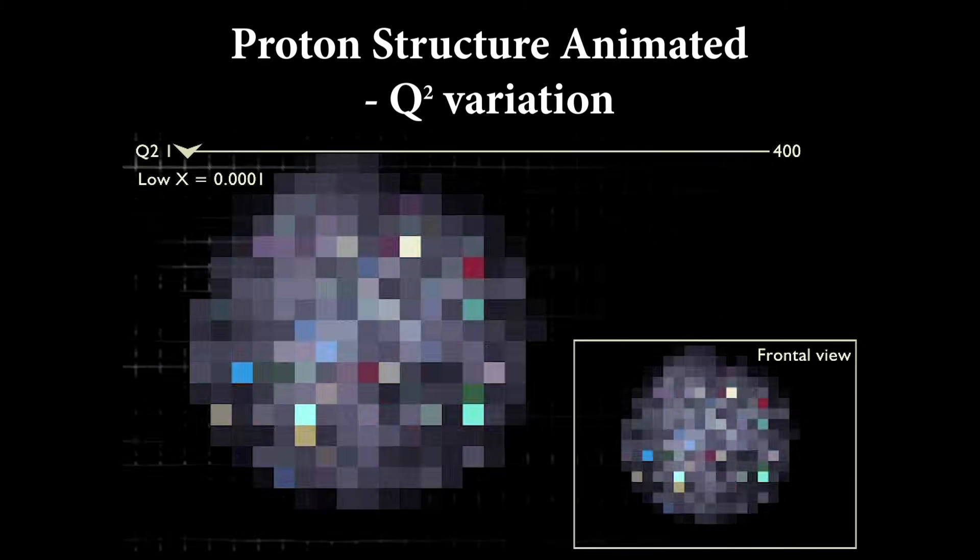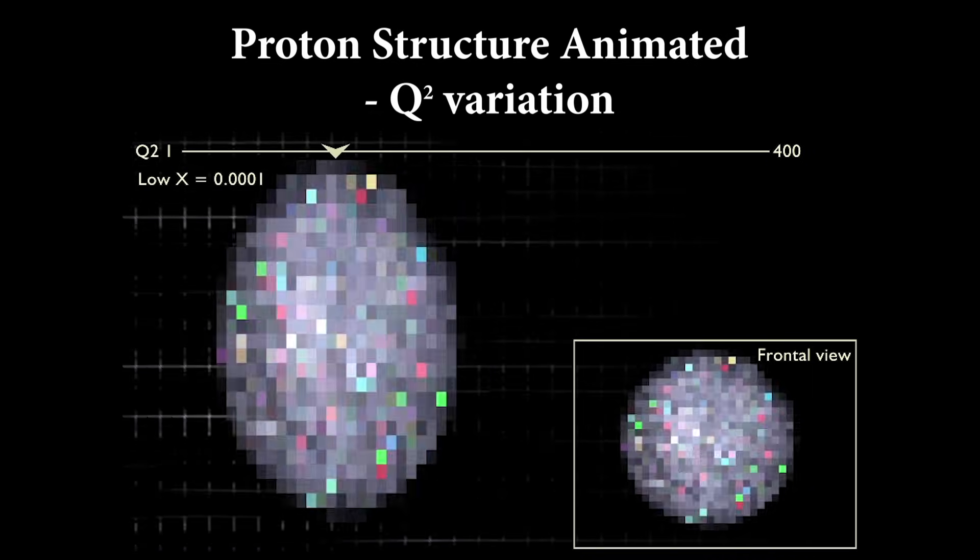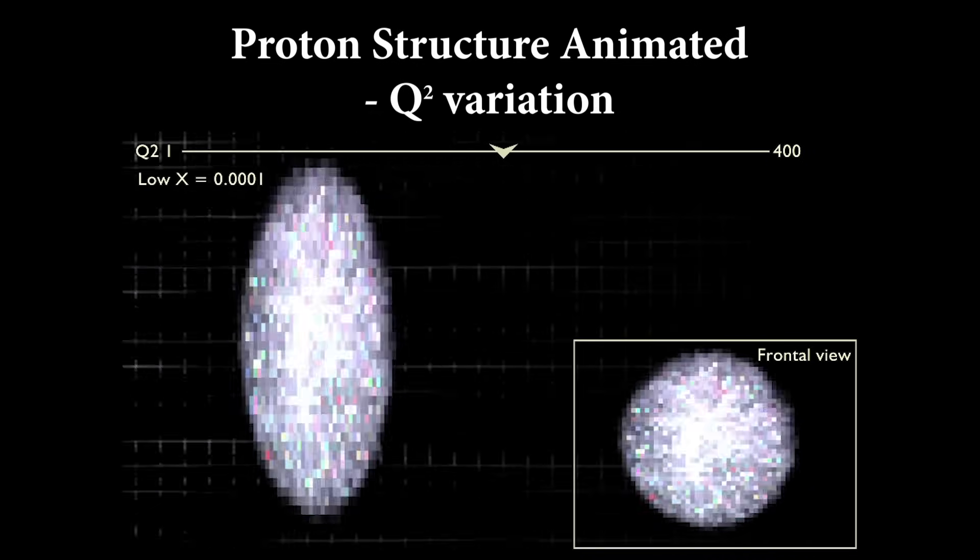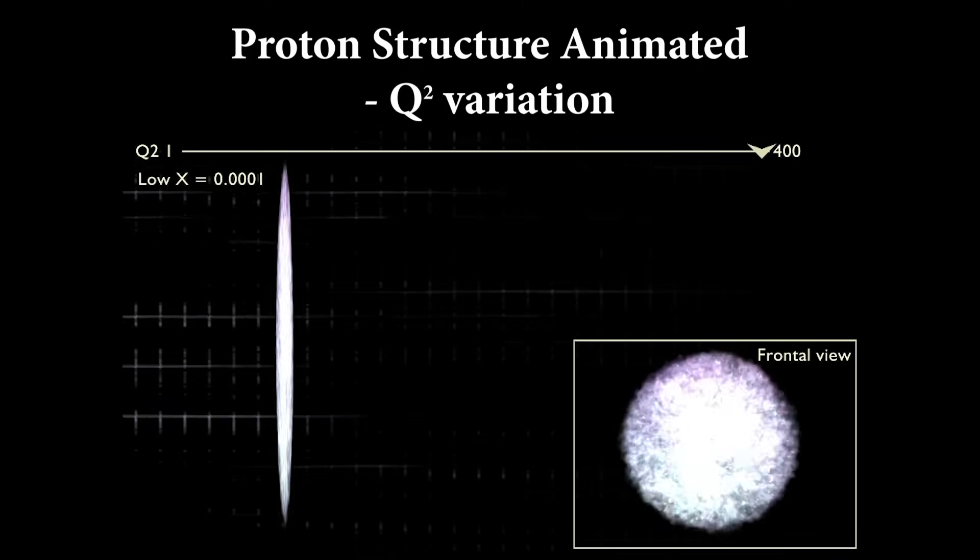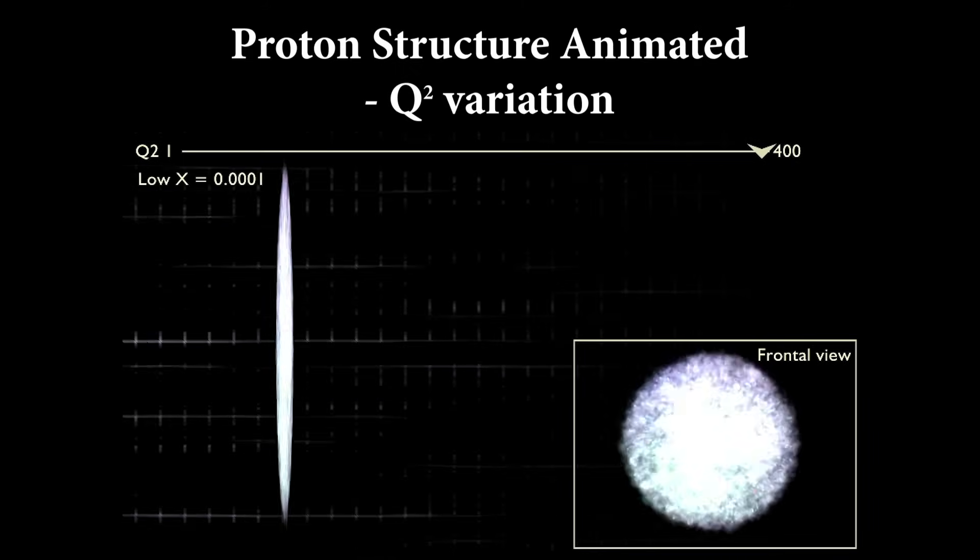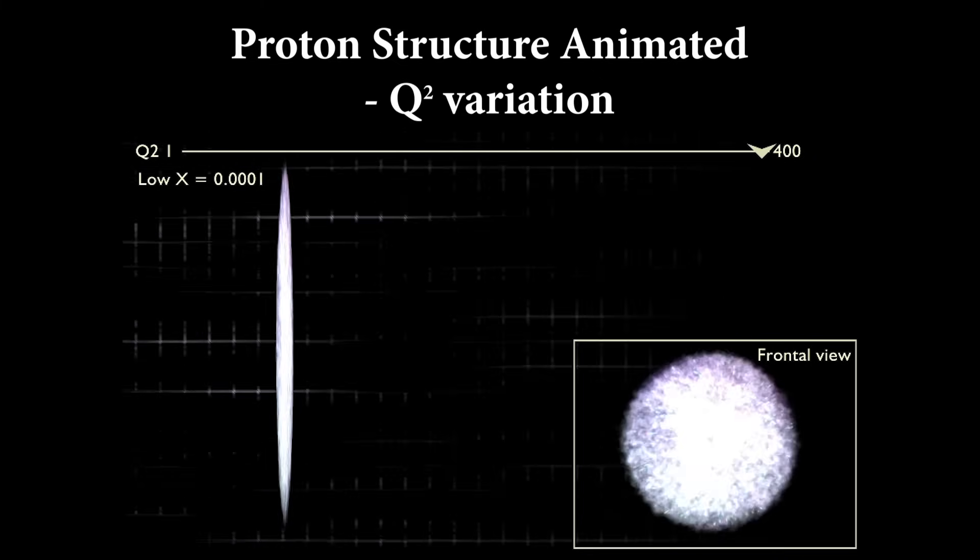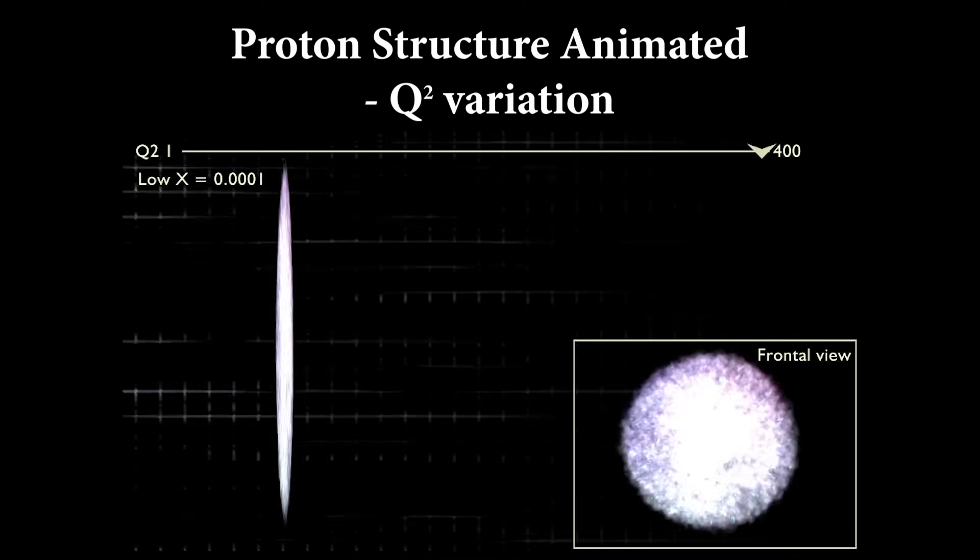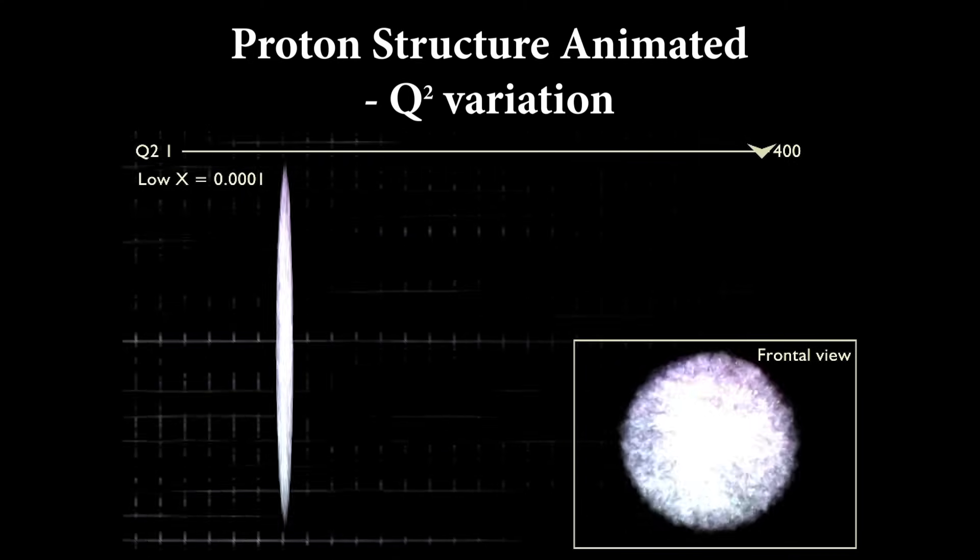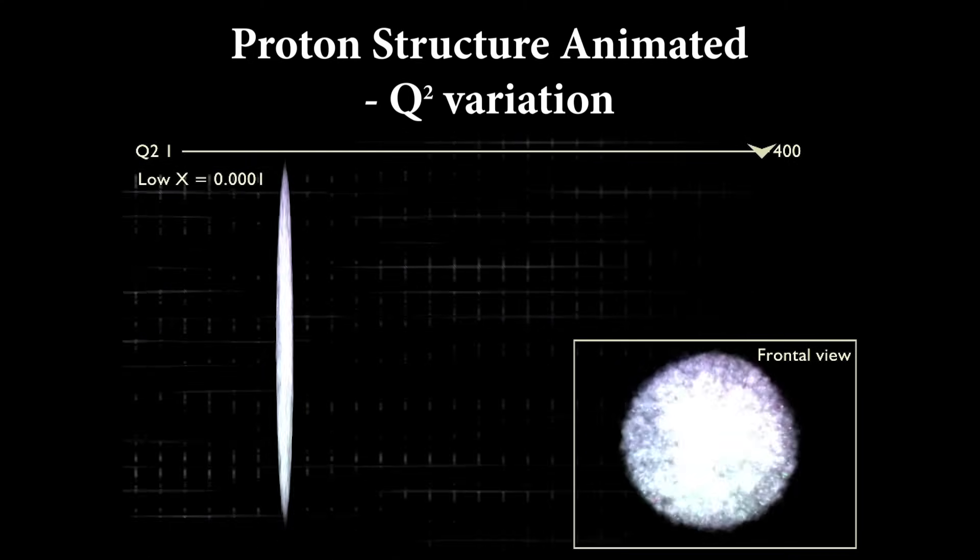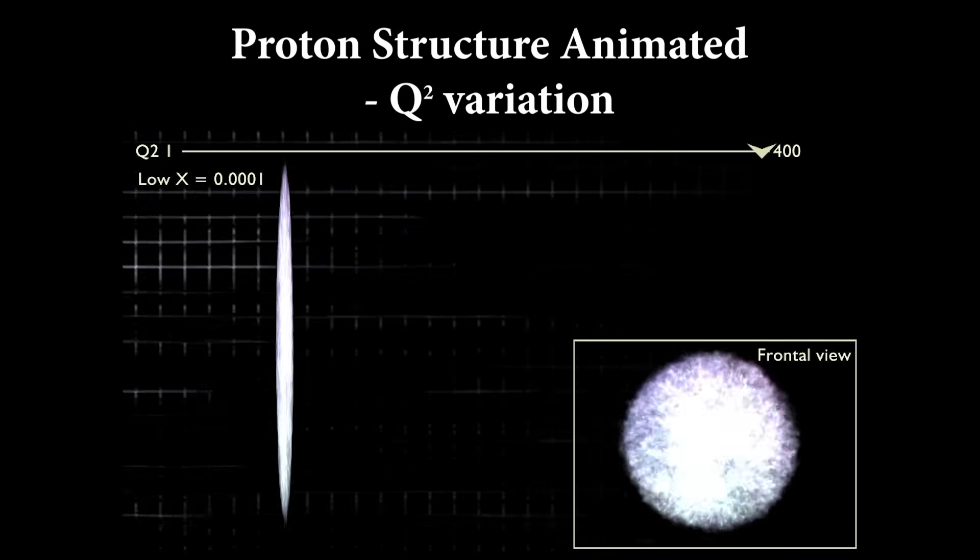What do we see when we peer inside the proton while increasing the spatial resolution Q squared of our camera? The answer depends on at which shutter speed X we are looking. At small values of X, we see more detail appear with increasing Q squared, but we also see more and more gluons appear due to the specifics of QCD. The observer will have to distill this information from what appears a squashed pancake-like proton due to the relativistic effect called Lorentz contraction.